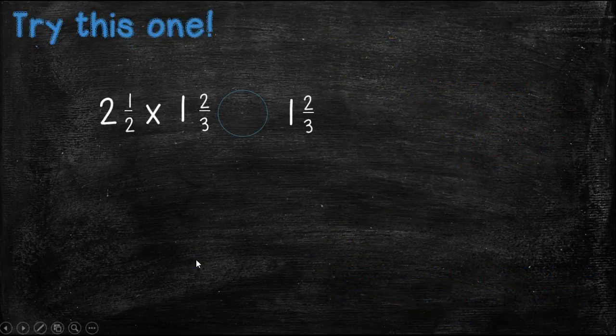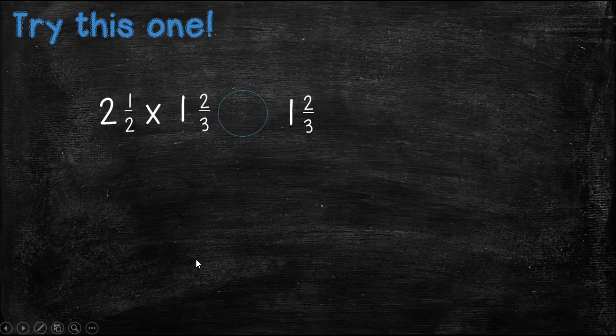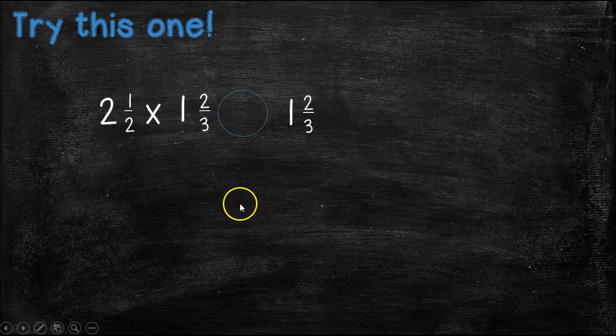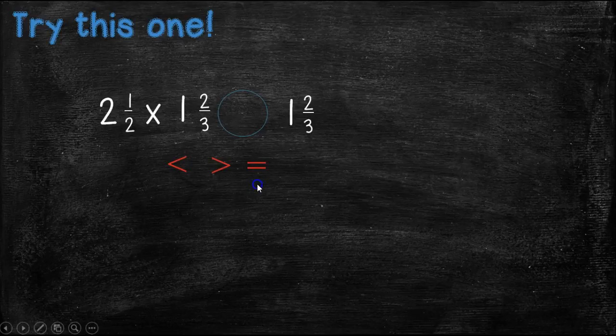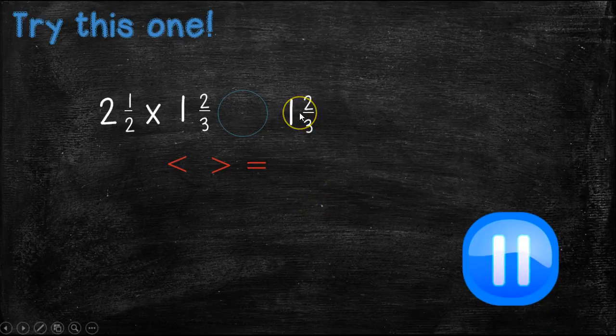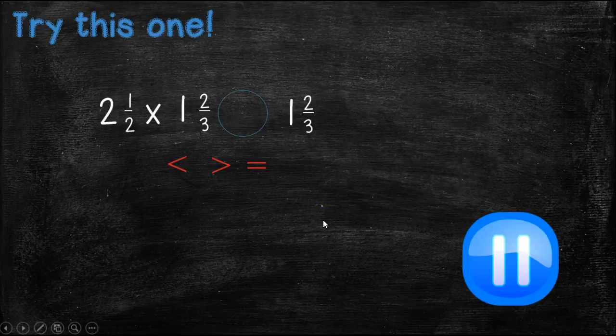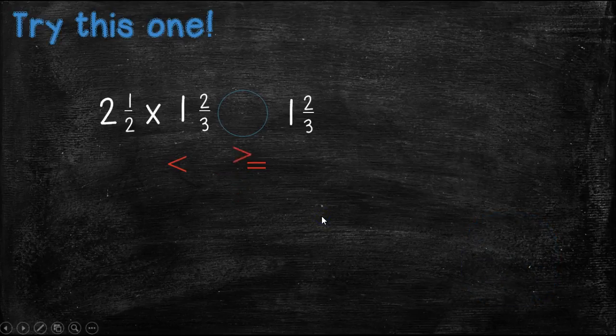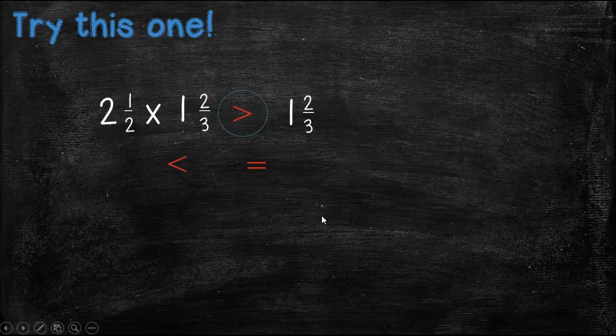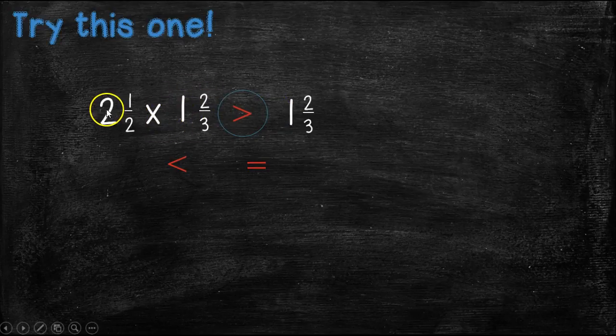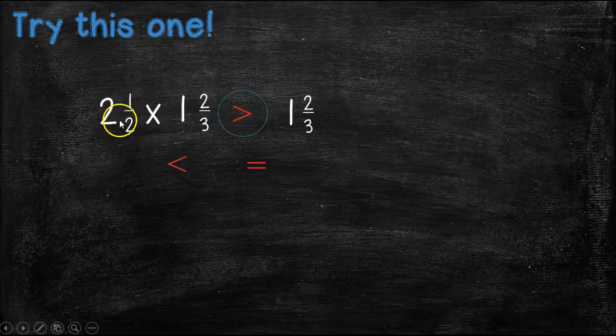Okay, so go ahead and try this one. Don't multiply it. I just want you to use the rules that we've just learned about scaling and think about it with common sense. And tell me, 2 and 1/2 times 1 and 2/3, will it be less than, greater than, or equal to 1 and 2/3? Go ahead and pause the video, put your answer down, and come back and see if you're correct. Coming back in 5, 4, 3, 2, 1. Did you get greater than? Good job. Well, that's because we know that 1 and 2/3 is going to be our product. So, we know if we're multiplying a number by a mixed number, because this is greater than 1, then this is going to be greater than the product.